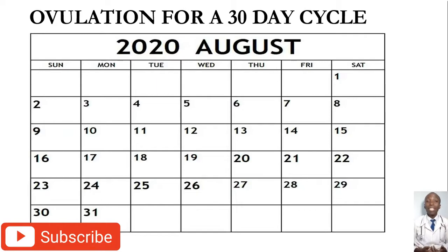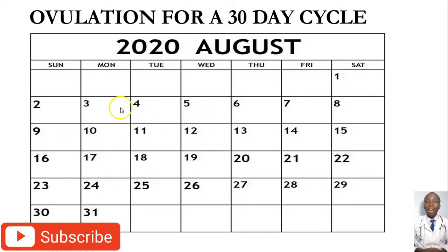Without further ado, the ovulation cycle calculation for a Saturday specifically begins with this example. We are taking an example of the month of August, assuming you started your periods on 3rd, then 4th, then 5th. If we want to calculate your ovulation date — the date when you are most likely to get pregnant, the day when you are releasing a mature egg also known as a Graafian follicle — we have to begin counting from the first day you saw your periods.